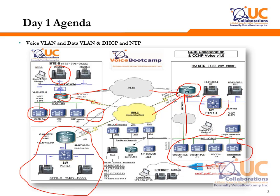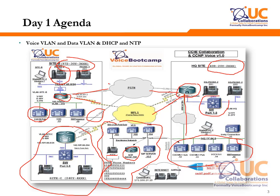There is a backbone network which you may or may not have control of. In the backbone you have a PSTN phone to test calls and a backbone router for NTP, plus one or two additional servers that may or may not be part of your lab. DIDs are assigned to each location: HQ is 408-20Y where Y is your pod number, with extensions 2xxx. Site B is North Carolina, 972-30Y with extensions 3xxx. Site C is Hong Kong, starting with 240Y, extensions 4xxx.